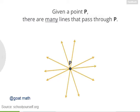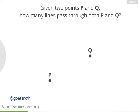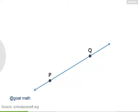But now suppose we have two points, P and Q. How many unique lines pass through both P and Q? Keep in mind that while we've drawn dots to represent P and Q, the points are actually infinitely tiny specks. Exactly — there's only one line that passes through both of these points. In general, given any two points, there's only one line that passes through both of them.